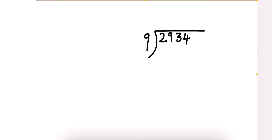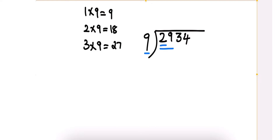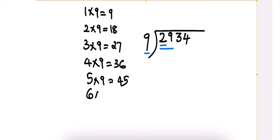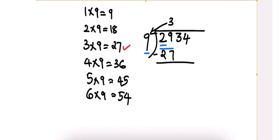The first digit is 2, which is less than 9 — less than the divisor — so consider the next digit as well. Our number of consideration will be 29. Divide 29 by 9. Use the multiplication table of 9: 1×9=9, 2×9=18, 3×9=27, 4×9=36. Since 4×9=36 is more than 29, take the previous: 3×9=27. Write 3 in the quotient. Multiply 3 by 9 to get 27, then subtract 27 from 29. We get 2.